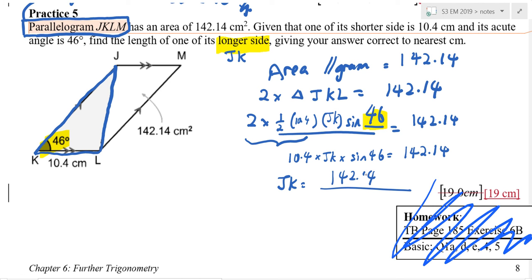10.4 times sine 46 equals to 142.14. Okay, good.